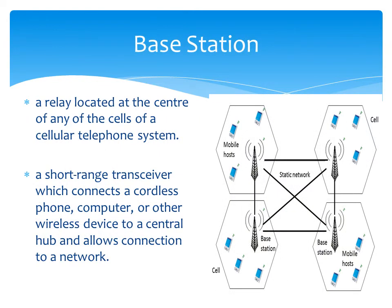A base station is a relay located at the center of any of the cells of a cellular telephone system. It is a short-range transceiver which connects a cordless phone, computer, or other wireless device to a channel hub and allows connection to a network. As demonstrated in the figure, you can see within each cell there is a base station connecting with the base station of the adjacent cell.